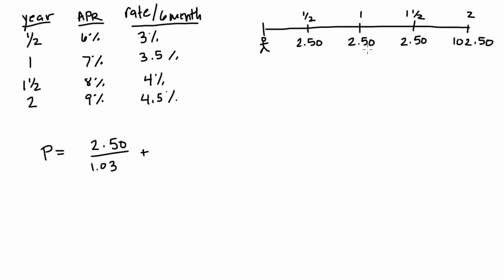For the second cash flow, which we receive at the one-year mark, which is $2.50, we're going to discount this at 3.5%, which we get from here, which is the rate for every six months. And since there are two periods, we have to discount it by 3.5% twice.